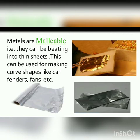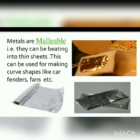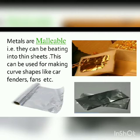Metals are malleable, meaning they can be beaten into thin sheets. This can be used for making curved shapes like car fenders and fans. The most common example is tin foil — tin is a metal beaten into thin sheets to make the foils we use to wrap food so that it remains warm. Similarly, the silver covering on sweets is silver beaten into thin sheets.